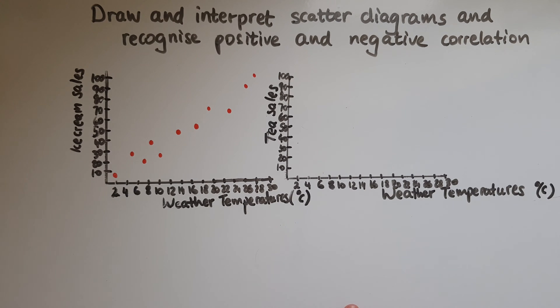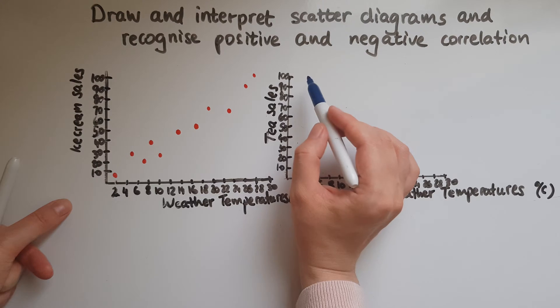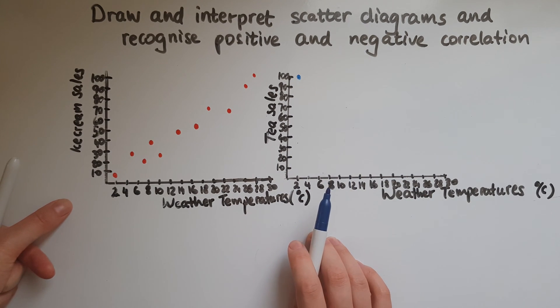Now on the other hand I've got here a scatter diagram which I've started but haven't finished and this is about showing the connection between weather temperature and tea sales. So hot tea, hot drinks. So when temperatures are low we have very high tea sales because that's quite common.